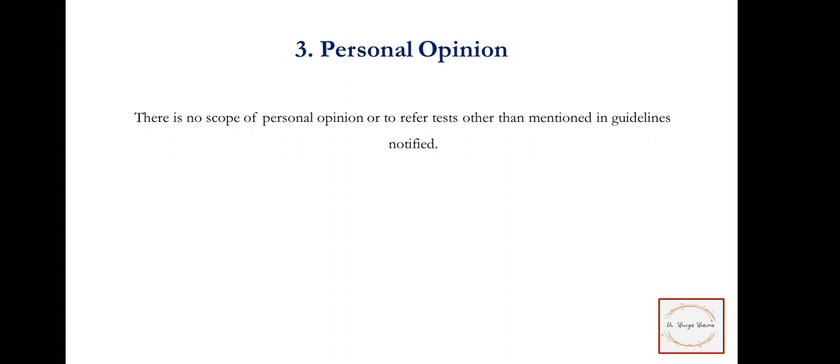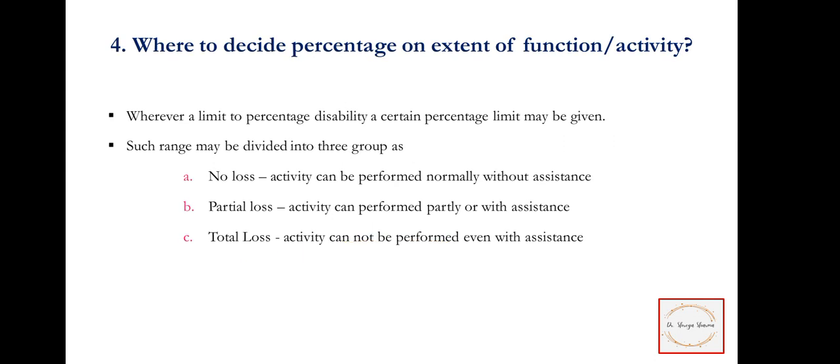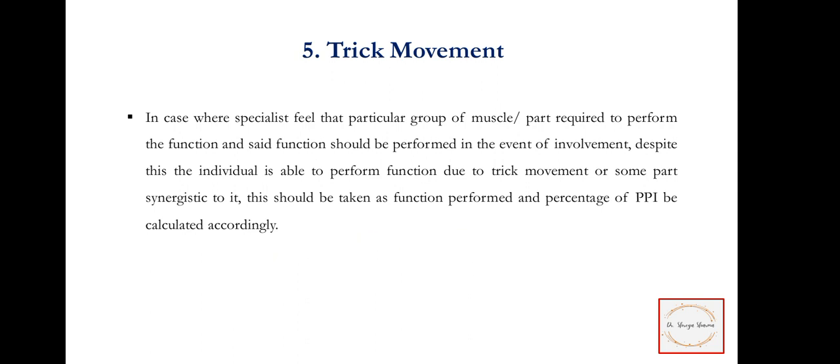The fourth principle concerns deciding the percentage or extent of functional activity. A certain percentage limit may be given: no loss means the activity can be performed normally without assistance; partial loss means the activity can be performed partially with assistance; total loss means the activity cannot be performed even with assistance. The fifth principle is trick movement.